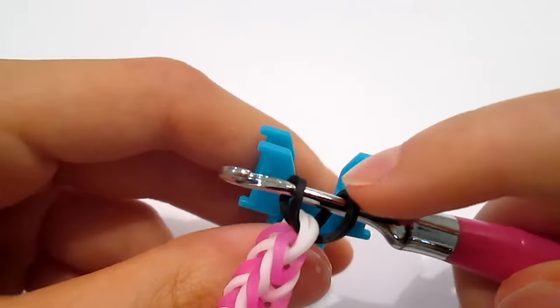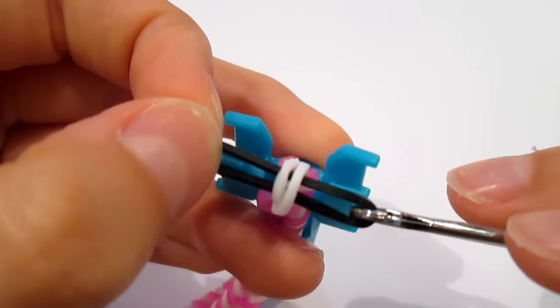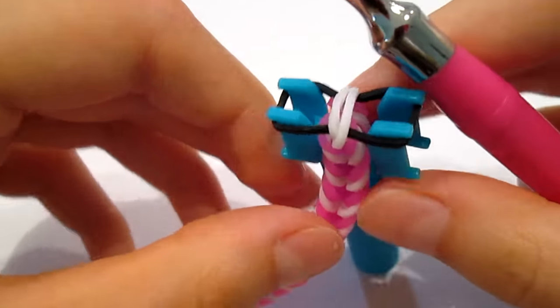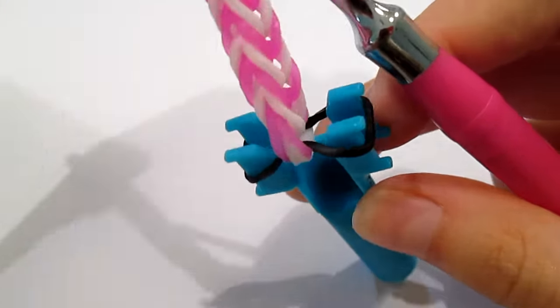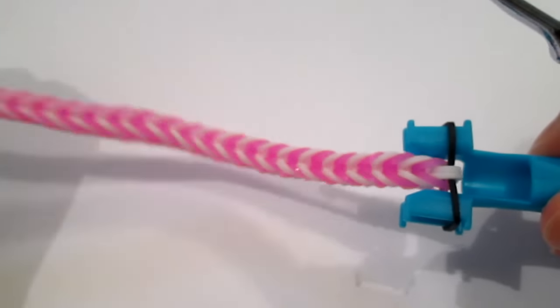And then take your mini loom, and then just place it on the two pegs like that. And then, it should look like that.